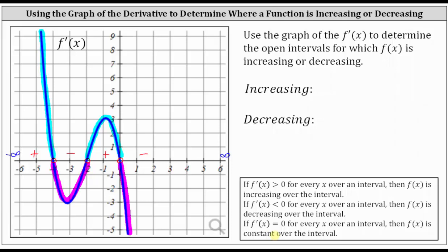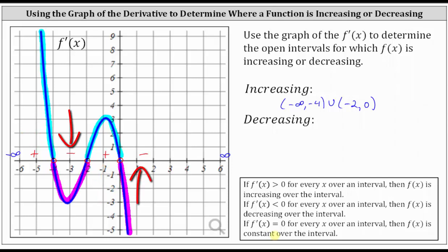This indicates that the function f of x is increasing, where the first derivative is positive, which would be the open interval from negative infinity to negative four, union the open interval from negative two to zero. And f of x is decreasing where the first derivative is negative, which is over the open interval from negative four to negative two, union the open interval from zero to infinity. I hope you found this helpful.